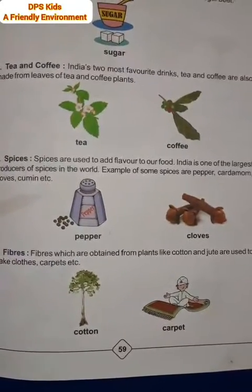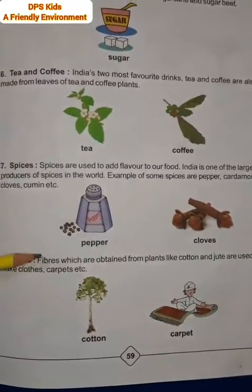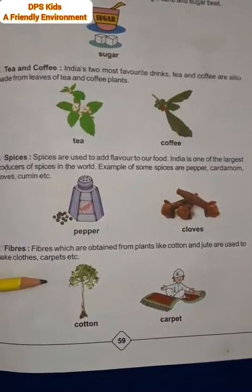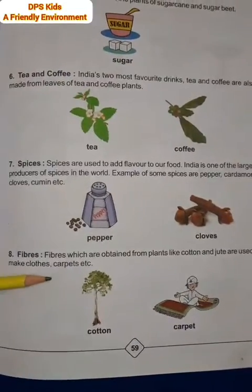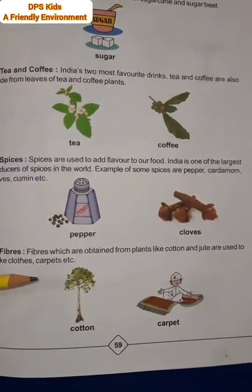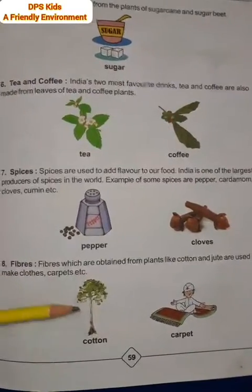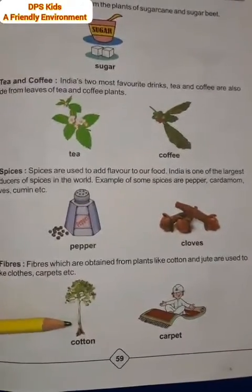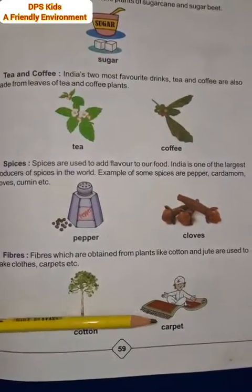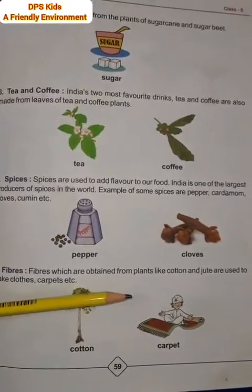Cloves, elaichi, etc. — यह सब spices में आते हैं। Fibers — fibers which are obtained from plants like cotton and jute are used to make clothes, carpets, etc। Cotton यानि कपास, जिससे हमारे कपड़े बनते हैं, वो भी हमें plants से मिलता है। Jute से भी अलग-अलग चीज़ें बनती हैं जैसे carpets, kaleen और bags — यह भी हमें plants से ही मिलते हैं।